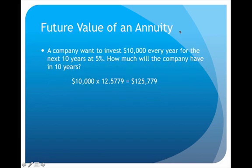In the final example, a company invests $10,000 every year for ten years at 5%. How much will they have in ten years? Normally investing $10,000 a year for ten years gives $100,000, but with compounding interest you end up with more. Using the future value of an annuity table, the answer is $125,779. The key takeaway from this lecture is reading the problem carefully and identifying the correct table to use — we'll get more practice with these tables in the upcoming bond demonstration problem.